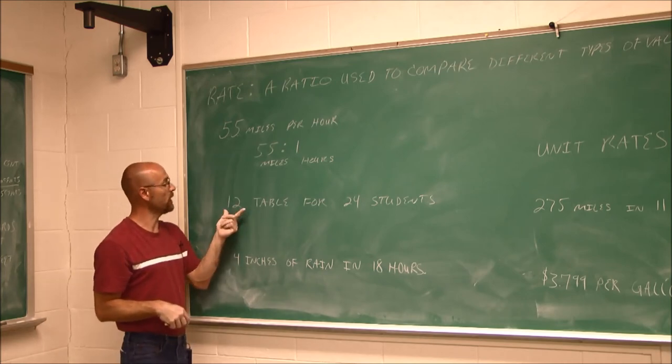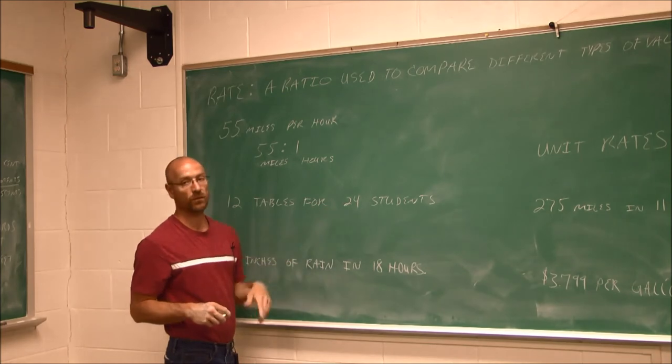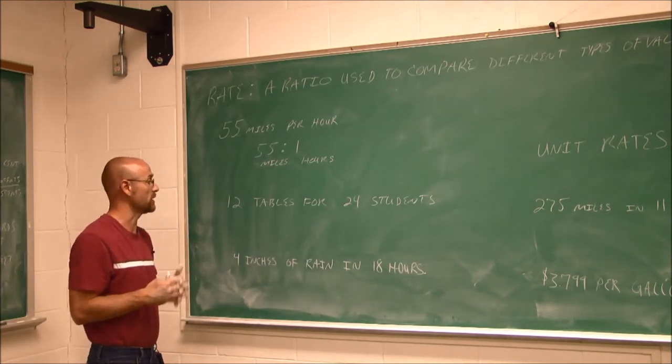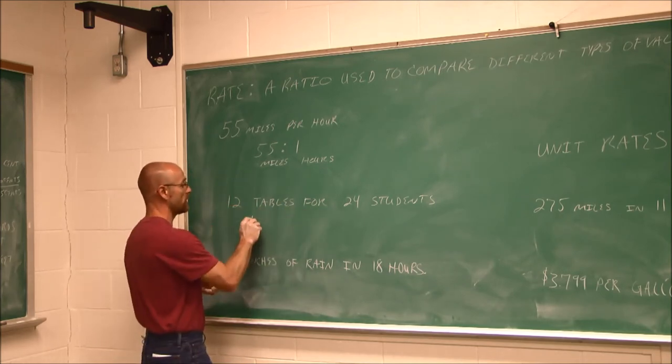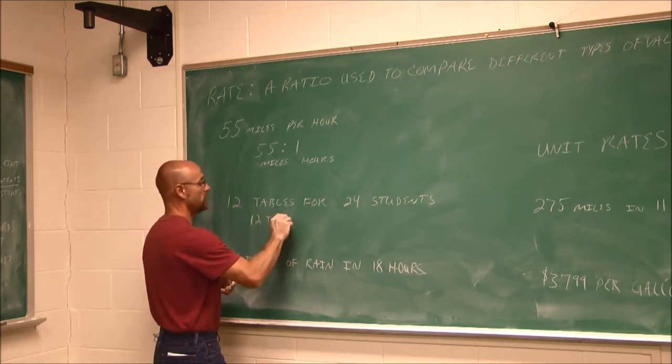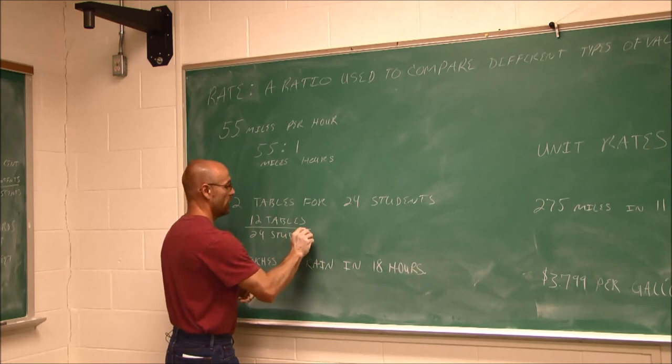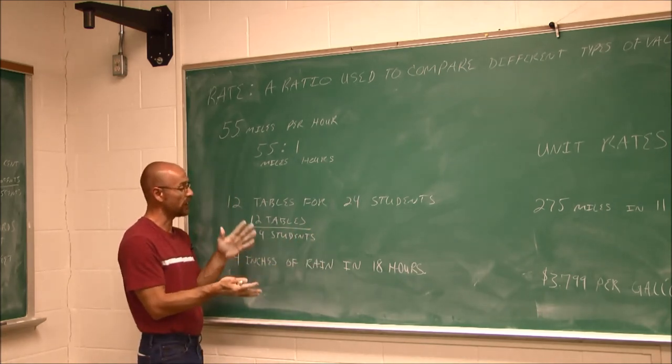Here's an example. If we have 12 tables for 24 students, and maybe I want to know how many students are going to be at a single table. 12 tables for 24 students, I can write that as 12 tables for 24 students. Now these are different units, so they're not going to reduce away. They're not going to cancel. They are what they are.